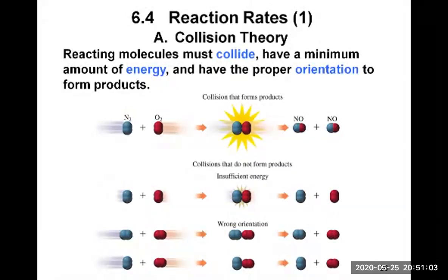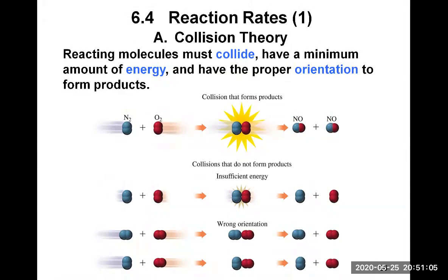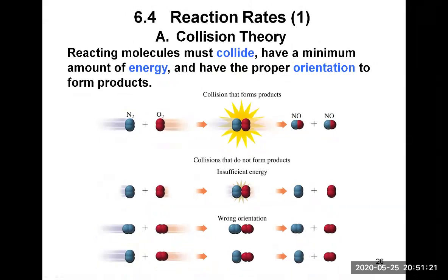This video covers section 6.4 on reaction rates. There is collision theory that explains the conditions under which reactions must occur. Reacting molecules must collide, have a minimum amount of energy, and have the proper orientation to form the product. Those three conditions must all be met for molecules to react and form products.